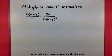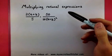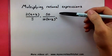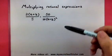Rational expressions are a lot like fractions, so when we go to multiply them, it works basically the same way. We'd multiply across the top and multiply across the bottom.